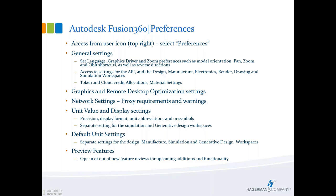We can set default units — and again, these are separate settings for each of the workspaces. Design can be in inches, manufacturing could be in millimeters. Simulation, generative design — we can go back and forth. There are some additional unit settings obviously in simulation for mass, time, heat, and so on. And then within these preferences, there is the ability to opt in to new feature reviews. So we can decide: do we want to add these tools to our workflow so that we can see what's coming? Or do we want to stay away from those and keep a clean and fully functional workspace?